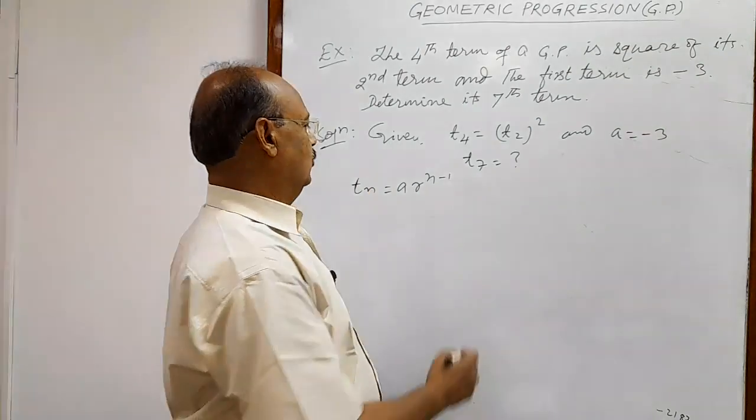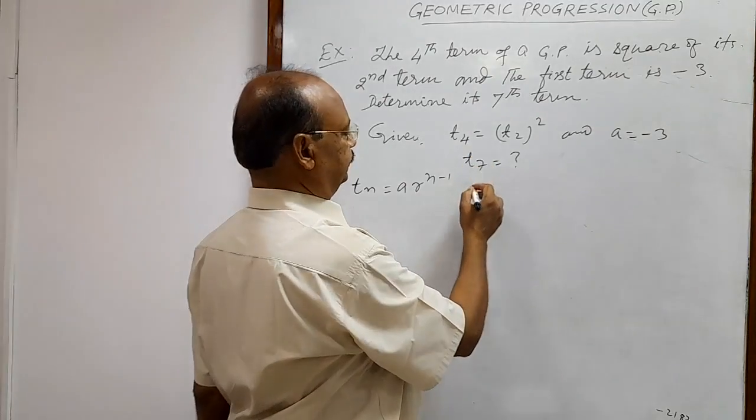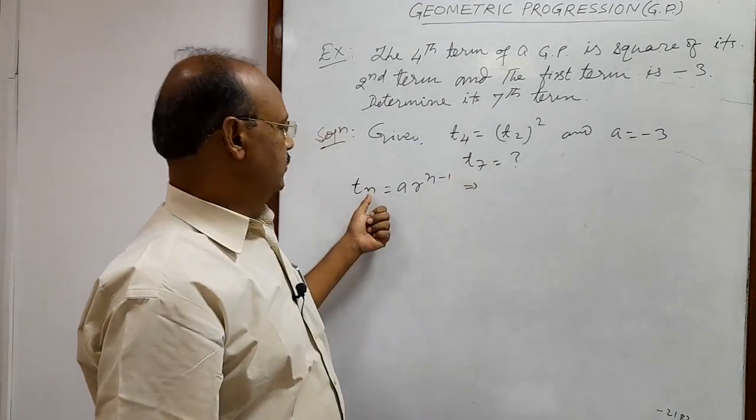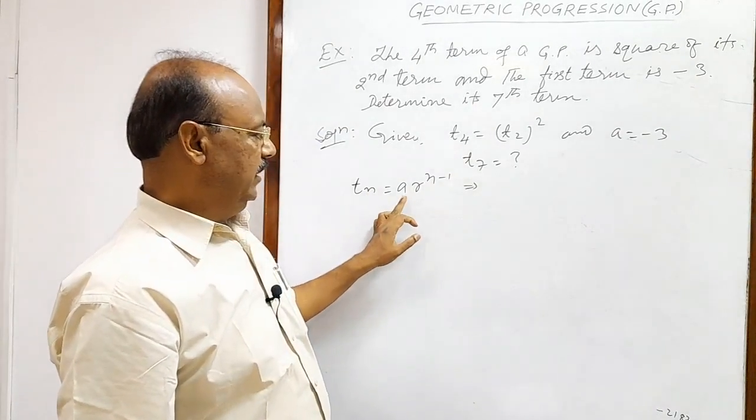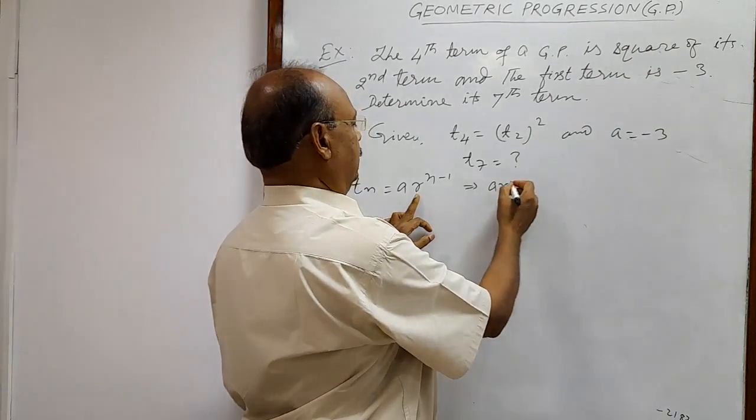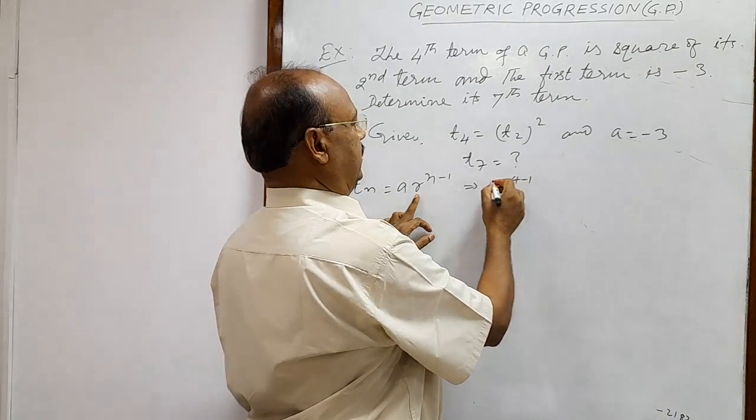So on the basis of this formula, we can write T4 is equal to how much? In place of n, we have to put 4. So A into R to the power 4 minus 1. A into R to the power 4 minus 1.